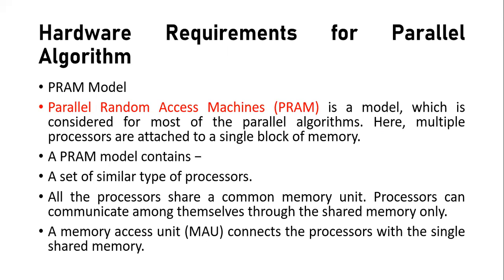Next, hardware requirements — these are the parameters of the parallel algorithm. One is the PRAM model, which stands for Parallel Random Access Machine, and it is considered for most parallel algorithms. The parallel algorithms are used on the PRAM model, where multiple processes are attached to a single block of memory. A PRAM model contains a set of similar types of processes, and all the processes share a common memory unit.